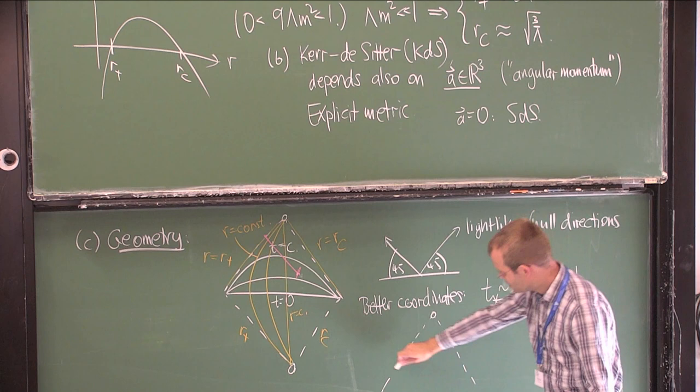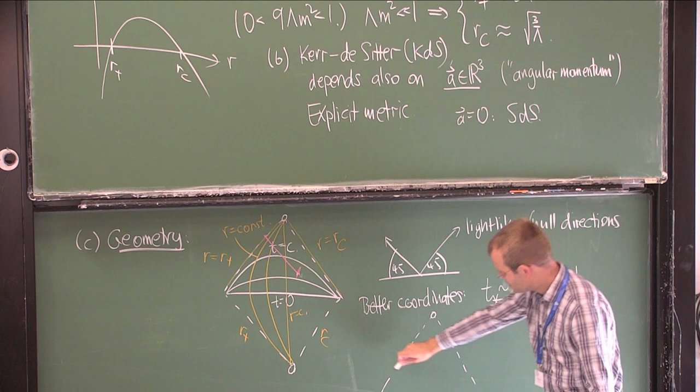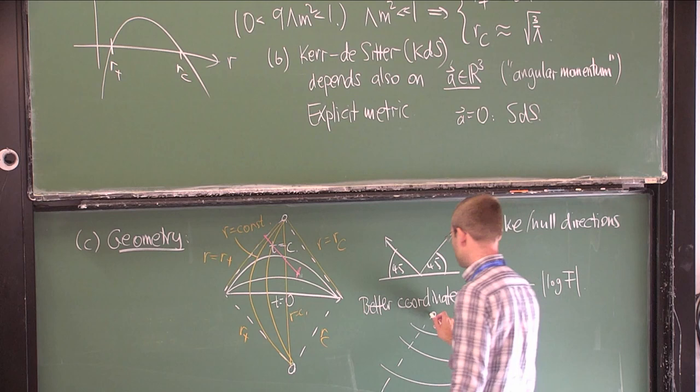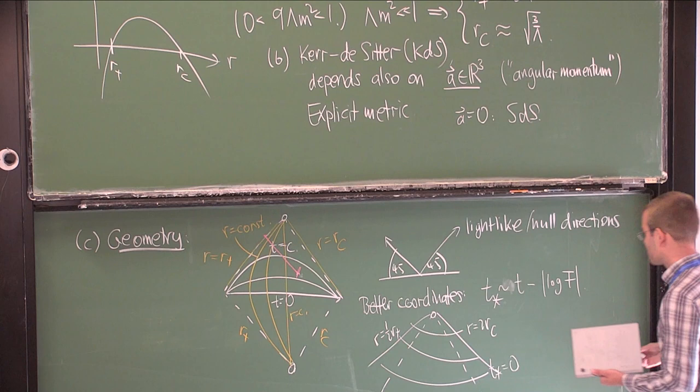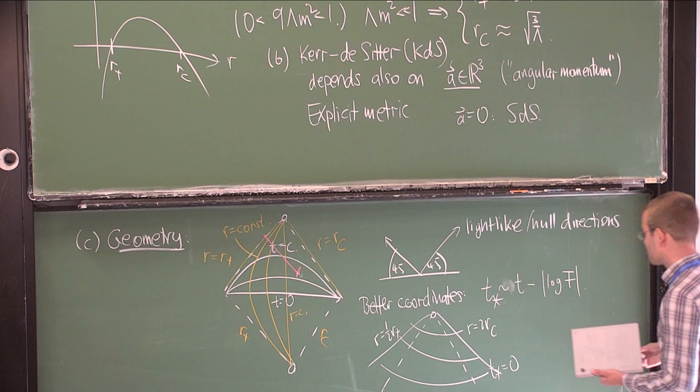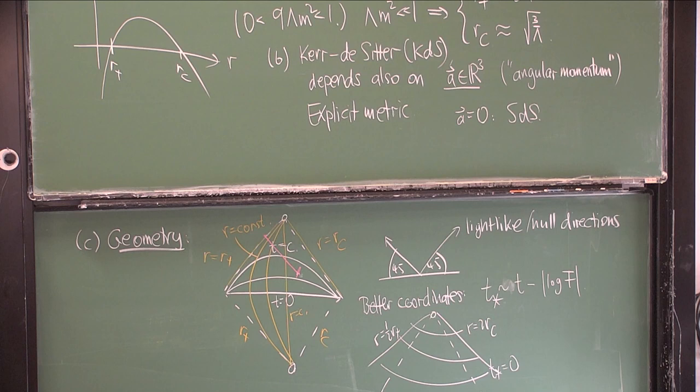The level sets of the T* function are now tilted, and the metric extends smoothly across the two horizons to, say, two times R_C and one-half times R+. The metric extends analytically to a larger domain and of course still satisfies the Einstein vacuum equations.